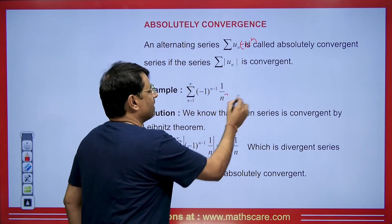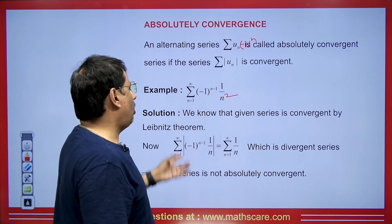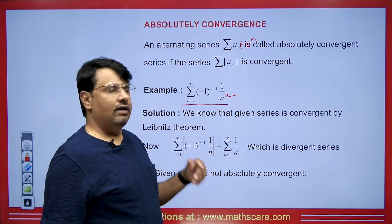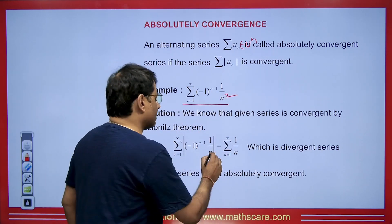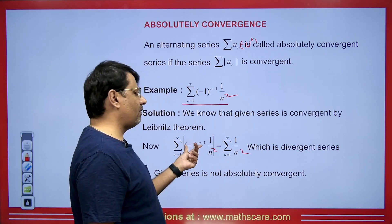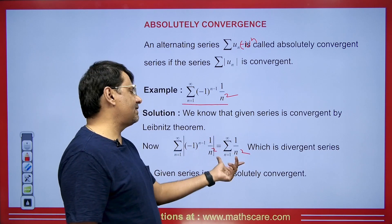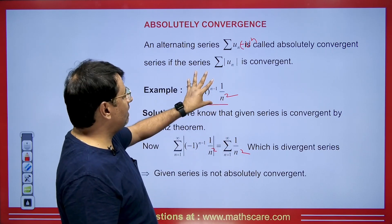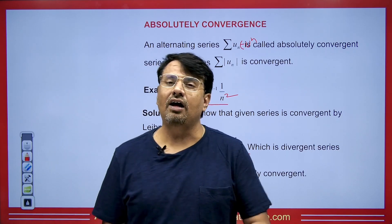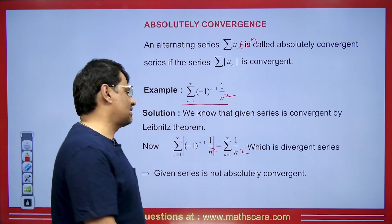Now if we have 1/n² instead, this alternating series is convergent by Leibniz's theorem. If we take the modulus, the (−1)^(n−1) disappears and by the p-series test the resulting series is also convergent. Since both the original series and its modulus series are convergent, this series is absolutely convergent. That is the concept of absolute convergence.